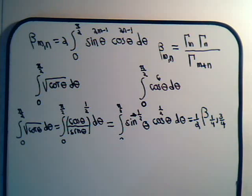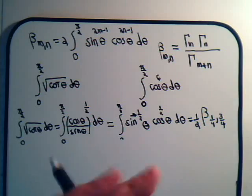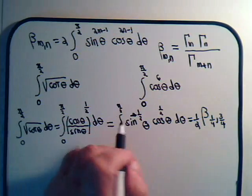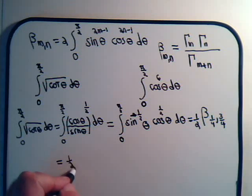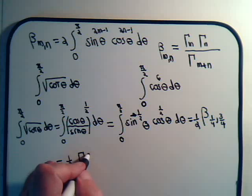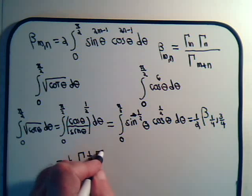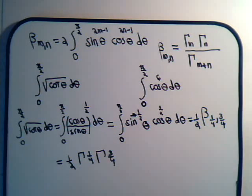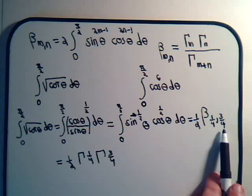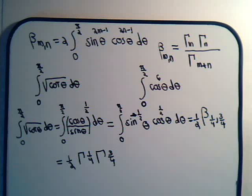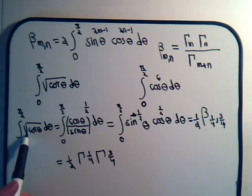If we want a numerical expression for this integral, using the relation between the beta and gamma functions, it equals one-half times the gamma function of one-fourth, times the gamma function of three-fourths, divided by the gamma function of one-fourth plus three-fourths. That's the gamma function of one, which is just one. So that's this integral expressed in terms of the gamma function.